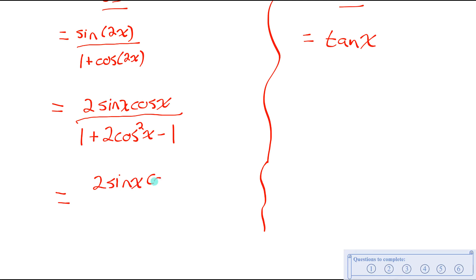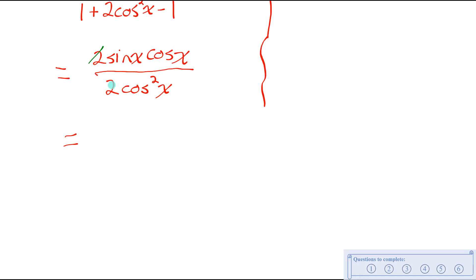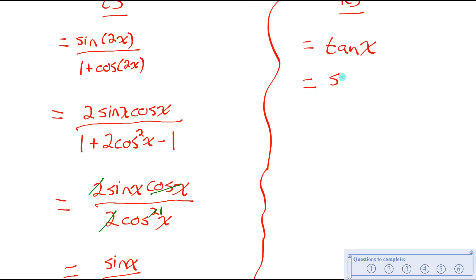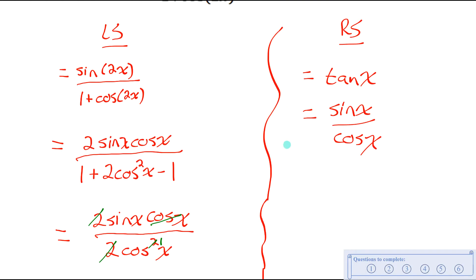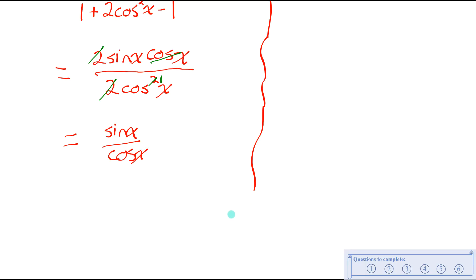I could have made this work with any of the other versions of the double angle identity, but this one saves me the most steps. So all I have left in the denominator is 2 cos squared x. That simplifies nicely because I have factors of 2 in the numerator and denominator — 2 divided by 2 is 1, so I can cancel those. And this factor of cosine can cancel with one of those factors of cosine. So all I'm left with on the left side is sin x over cos x. I could then rewrite that as tan x based on the quotient identity. Either way, I've shown that the left side and right side are in fact the exact same expressions.